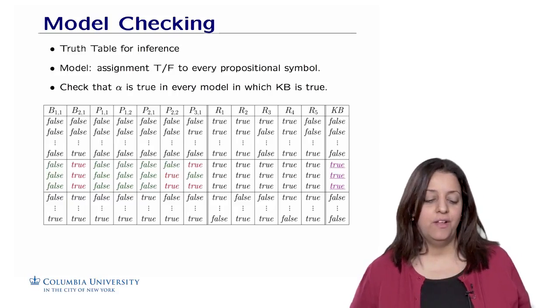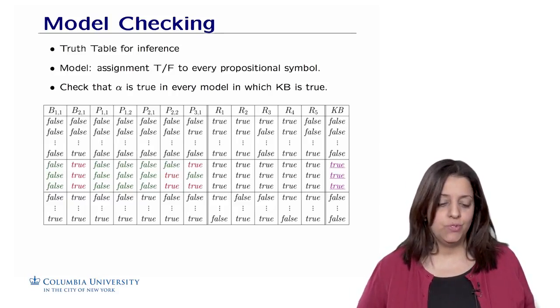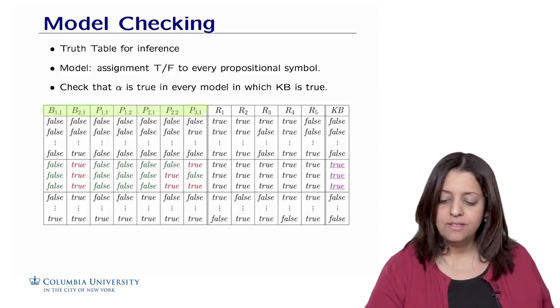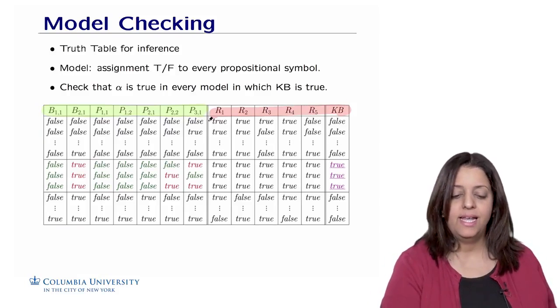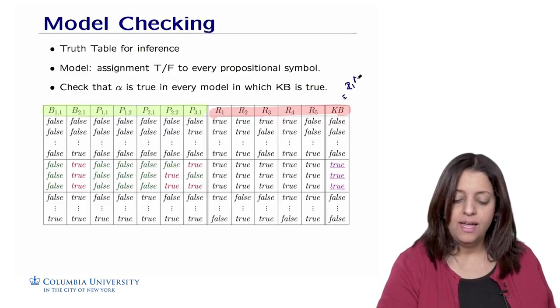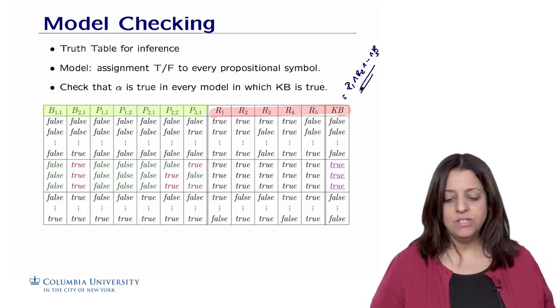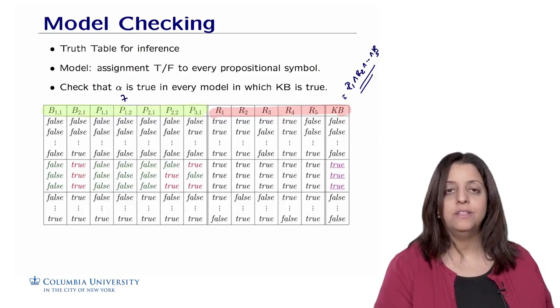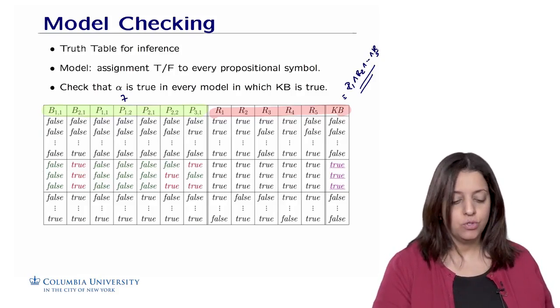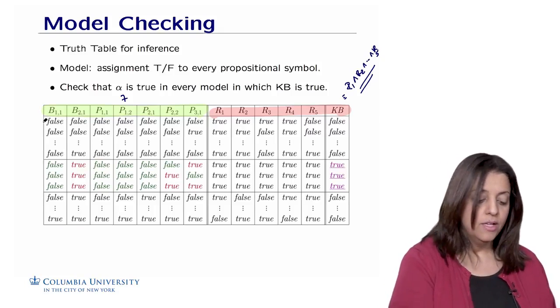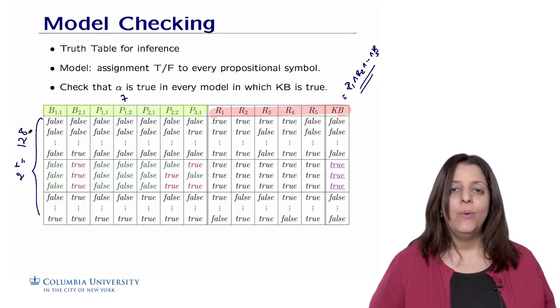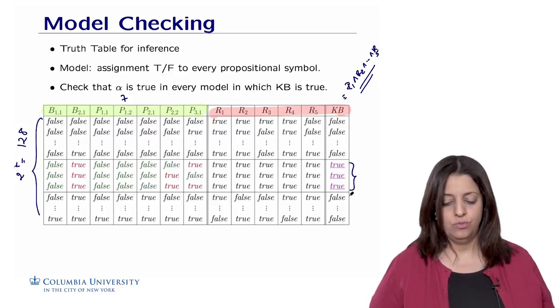Let's consider the set of rules we built in the knowledge base to represent the reduced Wumpus world, in which we used a set of seven propositional symbols, b11 through p31, and wrote a set of five rules to represent the knowledge base. The knowledge base could be written as rule one and rule two and rule five. We have seven propositional symbols, so we have 2 to the 7 equals 128 possible rows in the truth table.